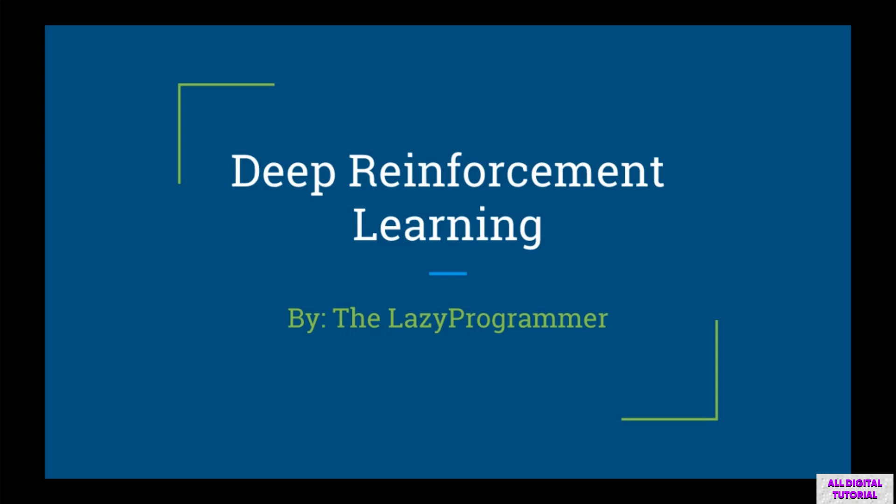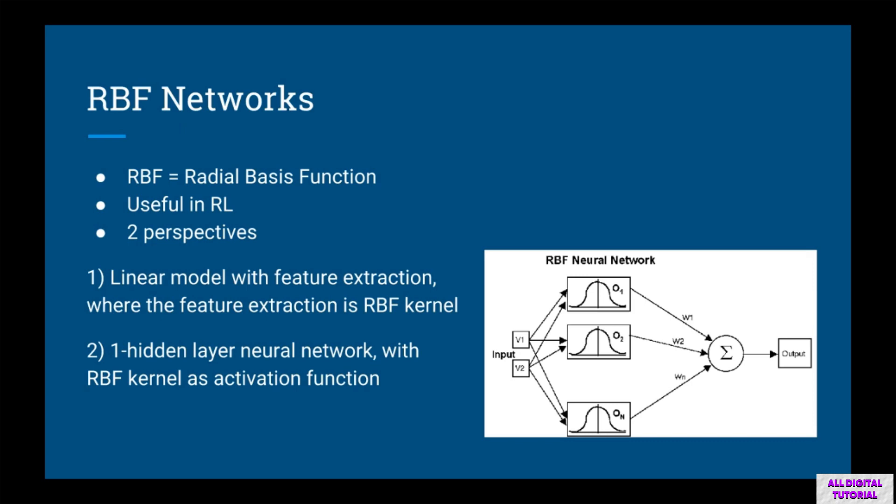Welcome back to Deep Reinforcement Learning, Deep Learning in Python Part 7. In this lecture we are going to discuss RBF networks. RBF stands for radial basis function. They allow us to proceed to the next step of using function approximation. There are two ways to think of an RBF network: first, as a linear model where we've done feature extraction first and the features happen to be RBF kernels; second, as a one hidden layer neural network with radial basis functions as the activation function.